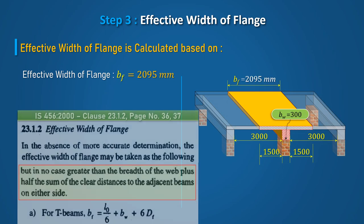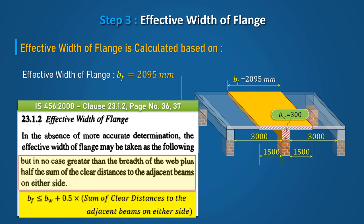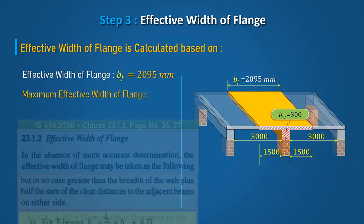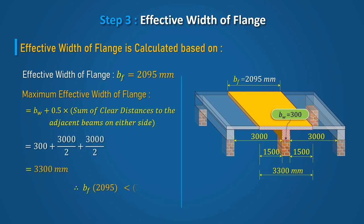The maximum value of effective width of the flange equals the width of the web plus half the sum of the clear distance to the adjacent beams on either side. This maximum value is 3300mm, which is more than the earlier calculated value. Hence, the effective width of the flange BF will be considered as 2095mm for further calculations.